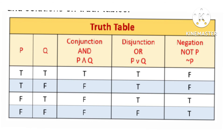For disjunction ('or'): if at least one of p or q is true, then p ∨ q is true. So true-true gives true, true-false gives true, false-true gives true. Only false-false gives false. So for disjunction, if both are false it is false, but if even one is true then p ∨ q is true.